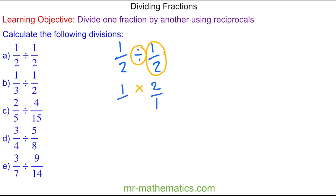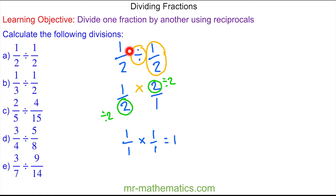So we have one half multiplied by two over one. With this question we can cross simplify because there is a common factor in the two twos, so we divide both by two. Now we have one over one multiplied by one over one, which is one. This makes sense because anything divided by itself will be one.